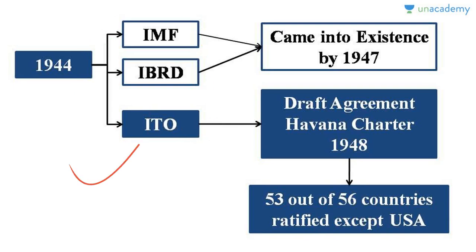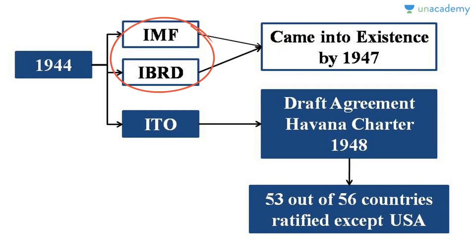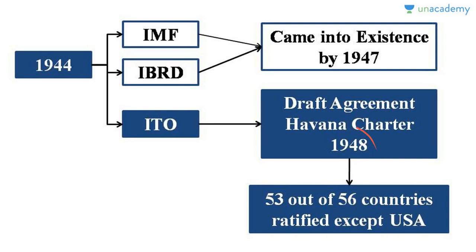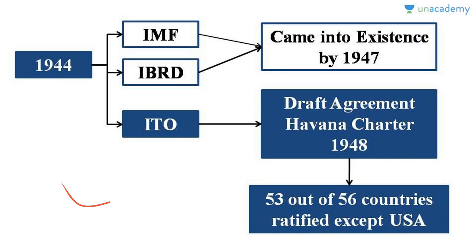By 1947, IMF and IBRD came into existence, but ITO was taking quite a lot of time. In 1944, there was a conference in Havana, where a final draft agreement — the Havana Charter for ITO — was prepared. All countries were required to ratify this charter in their respective parliaments. 53 out of 56 countries ratified, and every country was waiting for the USA to ratify it in the US Congress.